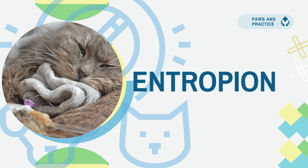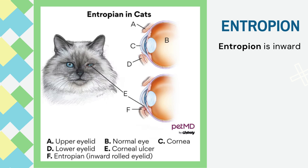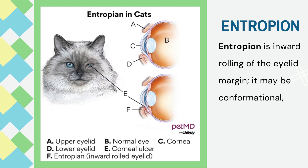Welcome back viewers. Today we are going to learn about entropion. Entropion is inward rolling of the eyelid margin. It may be conformational, developmental, spastic, or cicatricial.